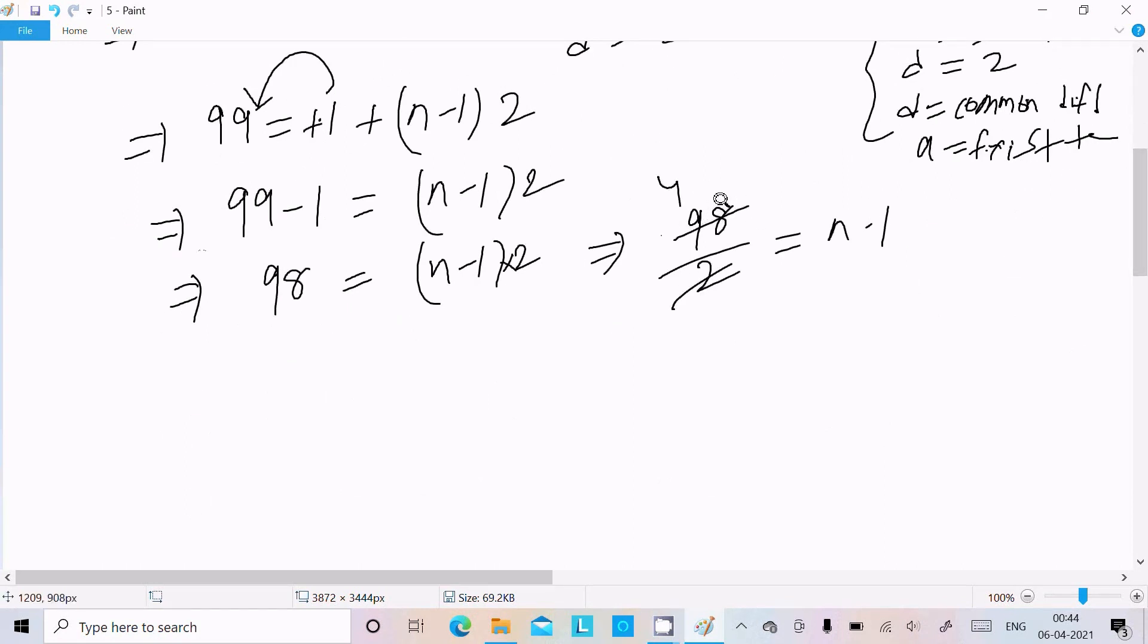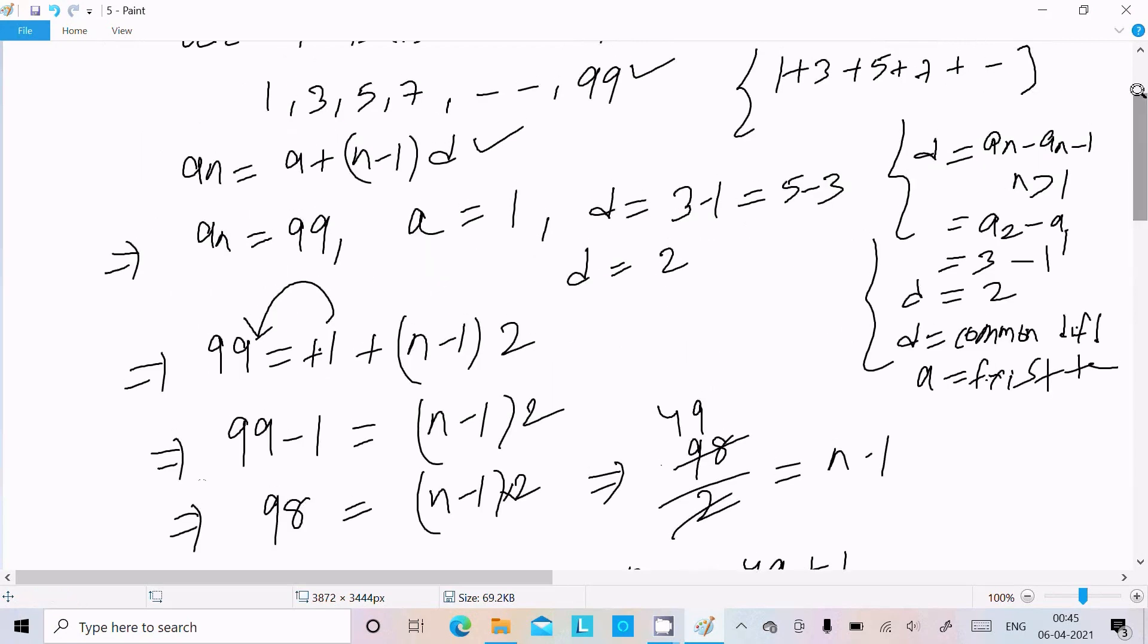So n - 1 = 49, therefore n = 49 + 1 = 50. The value of n is 50.